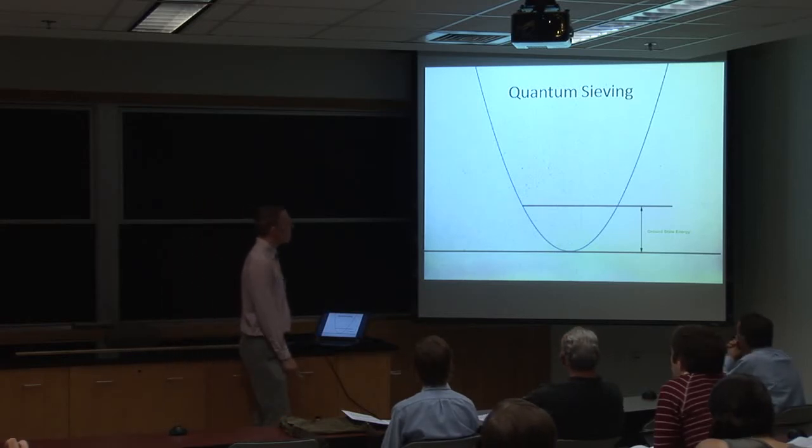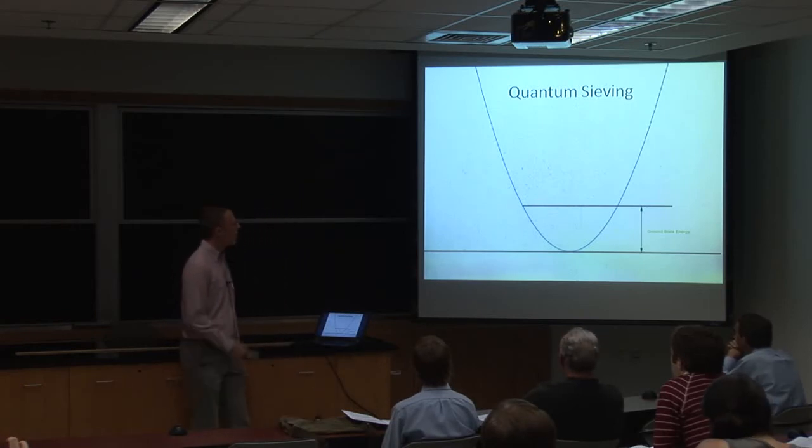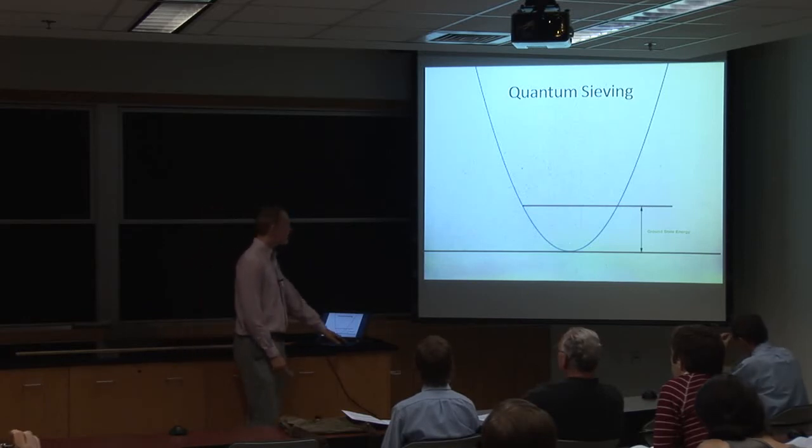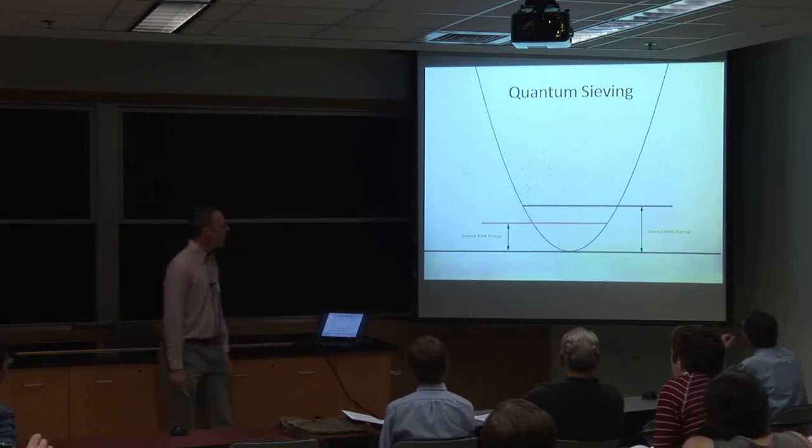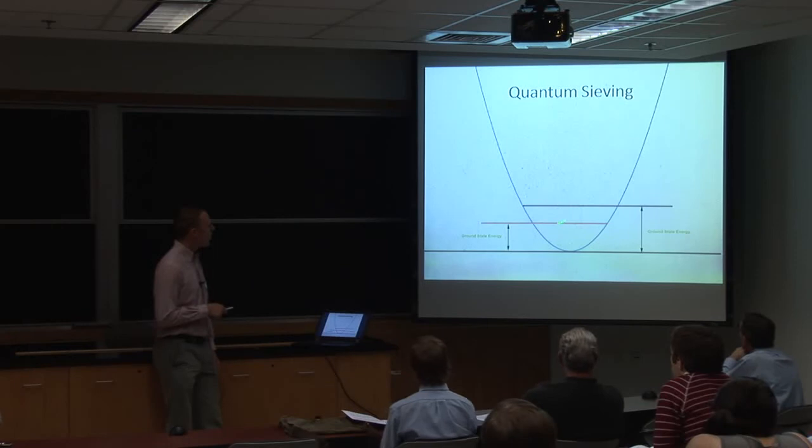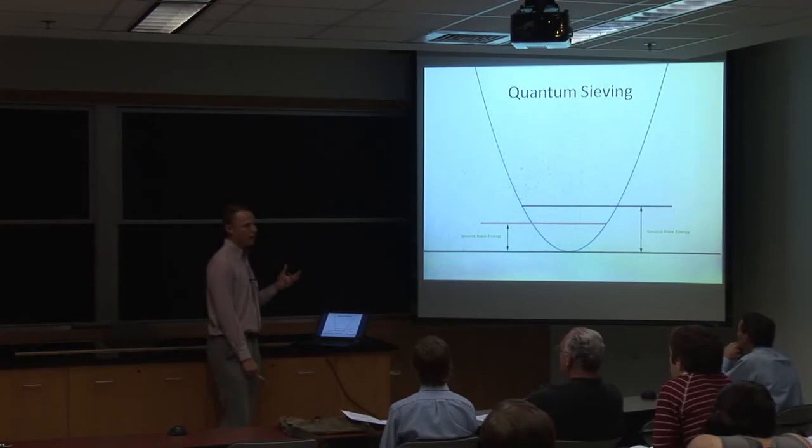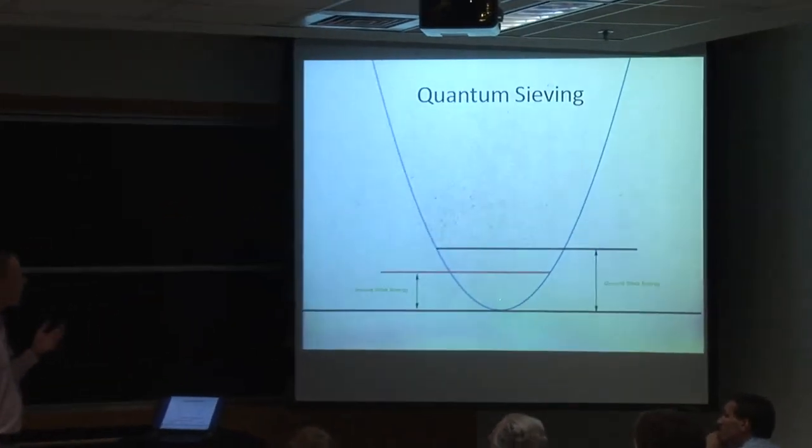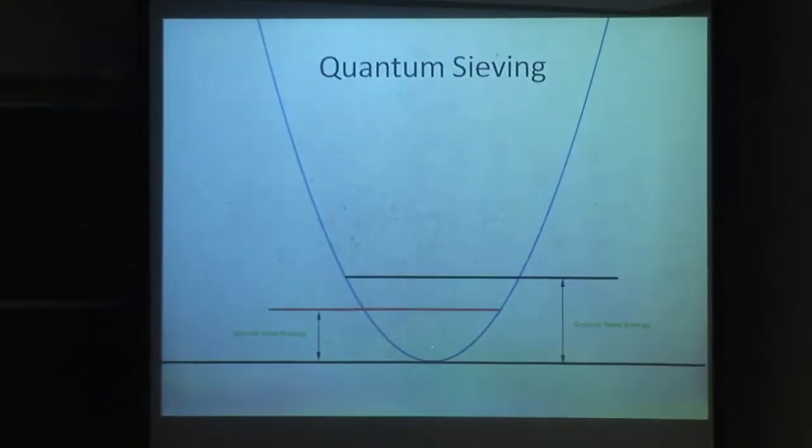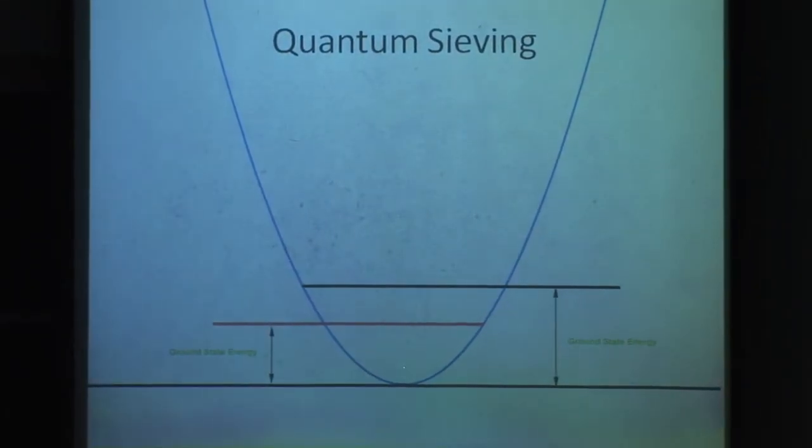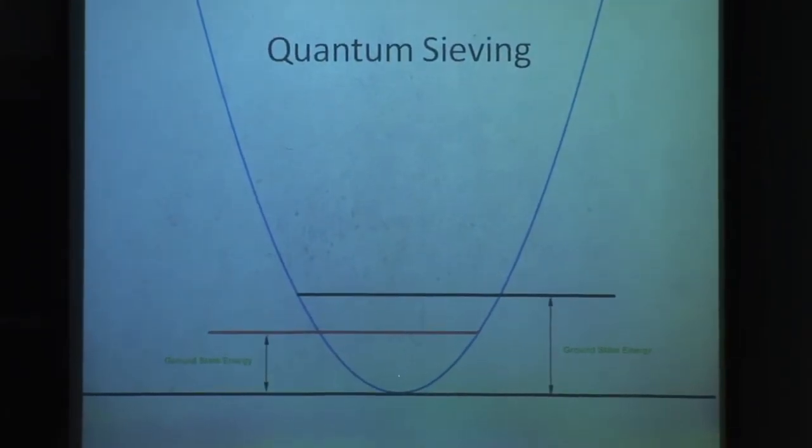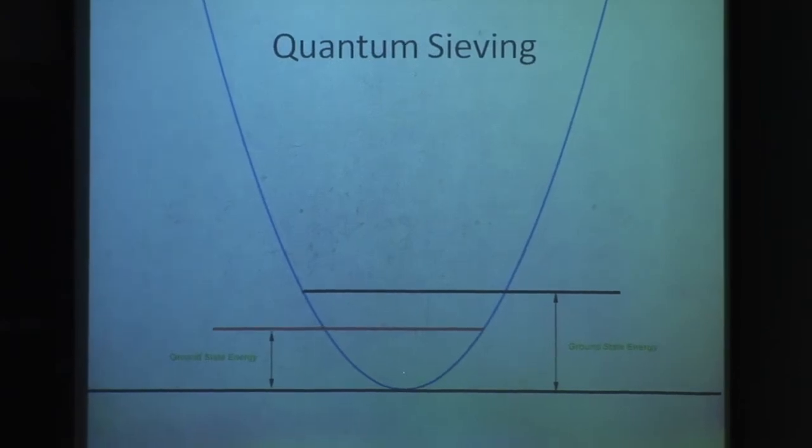Quantum sieving is essentially when we see two species, in our case hydrogen and deuterium, who are bound in approximately identical potentials and are classically identical, differ by some property that causes their ground states to differ. In our case we're looking at mass. We're going to look at this phenomenon inside metal organic frameworks, where hydrogen and deuterium gas is trapped, adsorbed to the surface. We find that deuterium possesses a lower ground state energy and hence is more tightly bound to the surface.